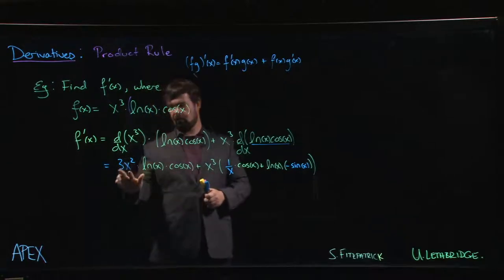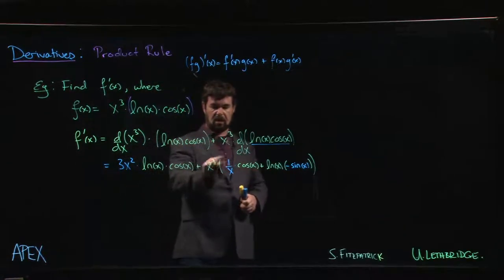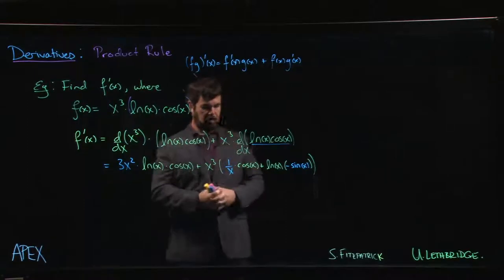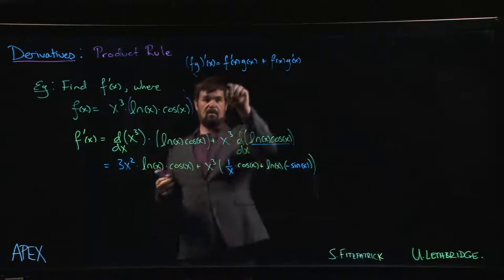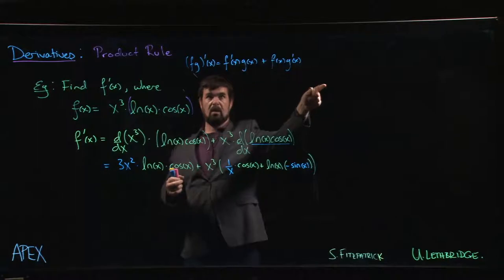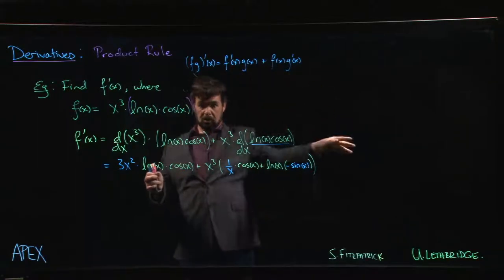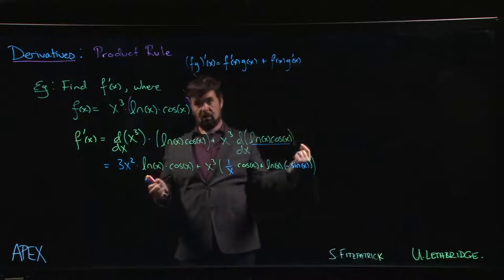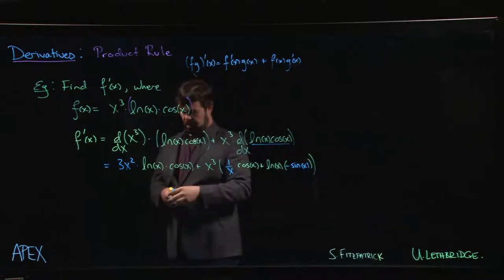If we push the x cubed through, what you're going to find is it's going to be the derivative of the first times the second and the third, plus the derivative of the second times the first and the third, plus the derivative of the third times the first and the second. So for each factor in your product, you're going to get one term in your sum, and each term is going to have the derivative of one of those functions multiplied by the other two. And you make sure that all those functions get hit. So we have it there.